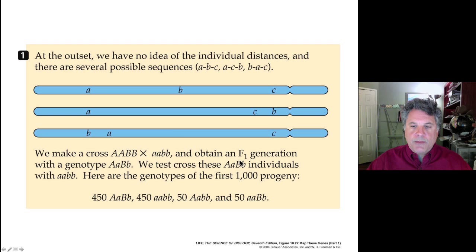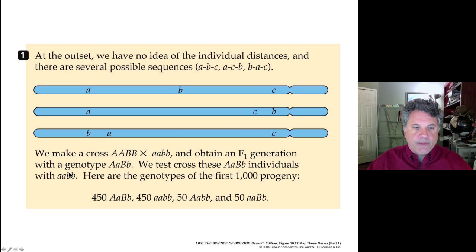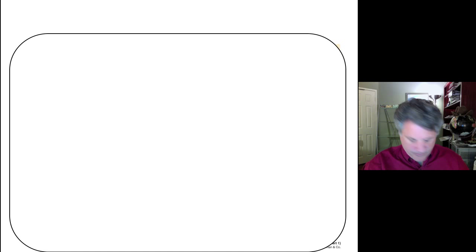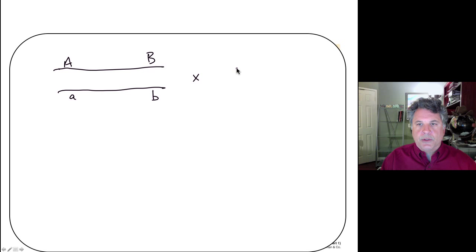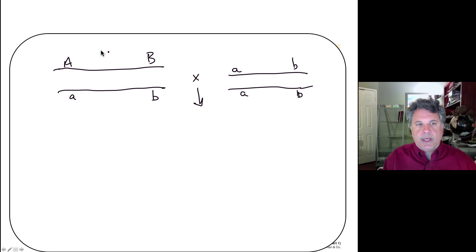We do the test cross because the chromosomes produced by this dihybrid will reveal their genotypes when placed over chromosomes inherited from the double recessive parent, since either recessive or dominant alleles will show up over those recessive alleles. So if we have big A and little a, and big B and little b in the dihybrid, and we cross to a double recessive little a, little a, little b, little b individual, we can examine what chromosomes emanate from this individual and their frequencies by looking at phenotypes. If A is dominant to little a and big B is dominant to little b, this allows us to read out the genotypes.